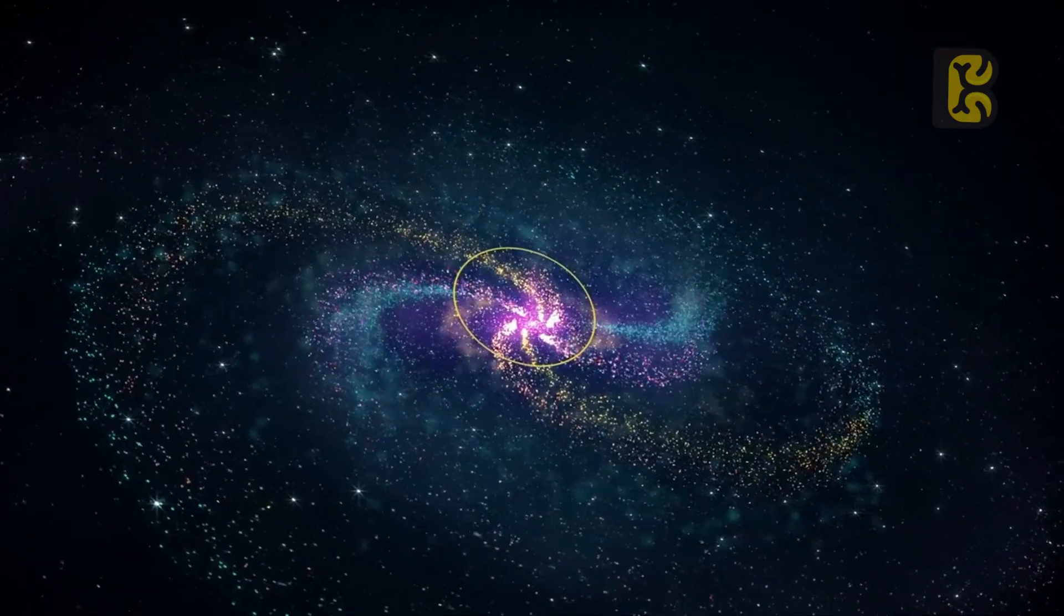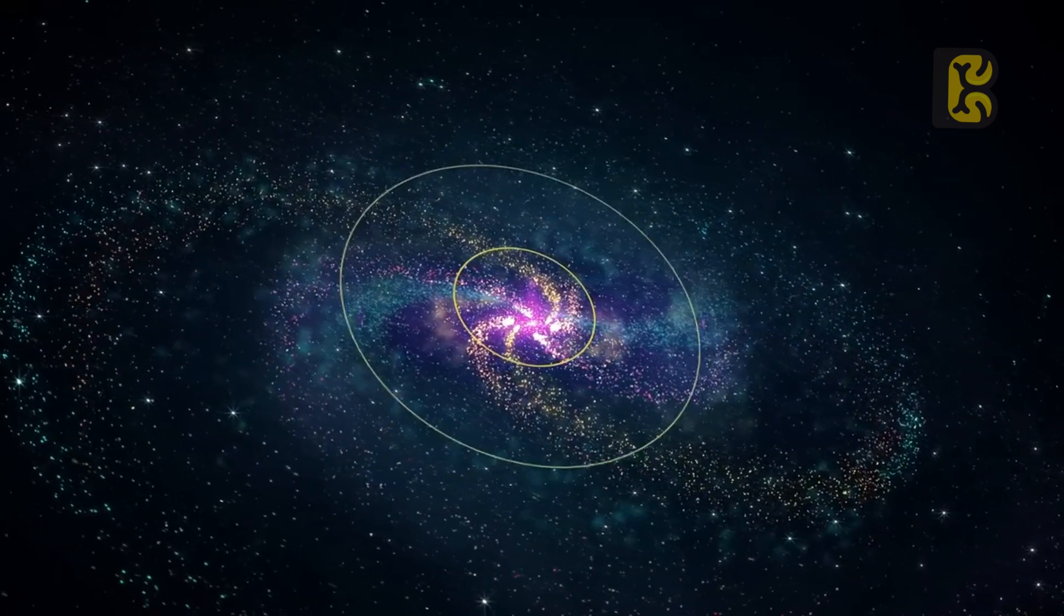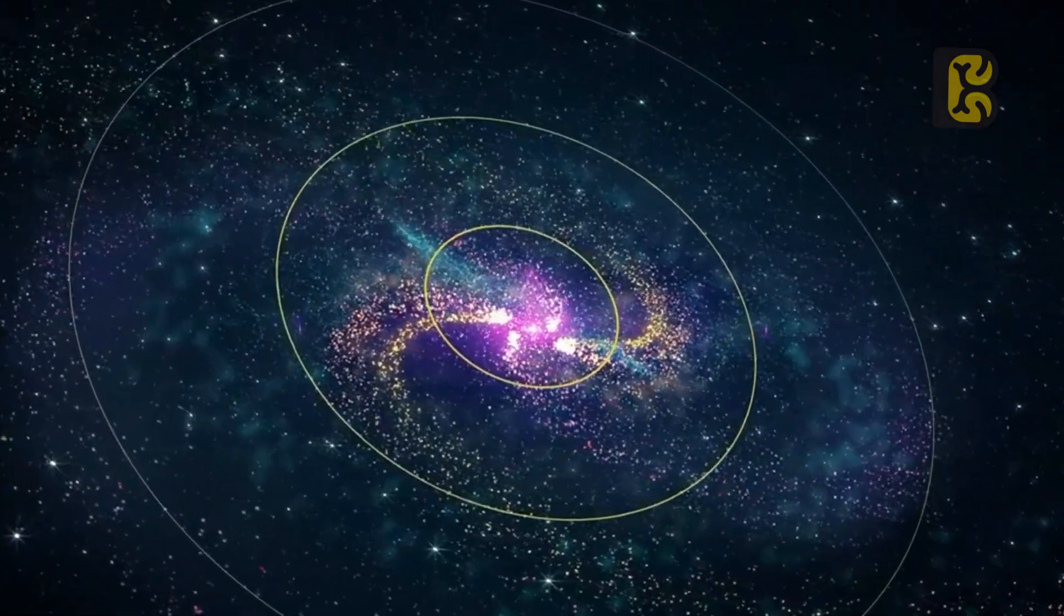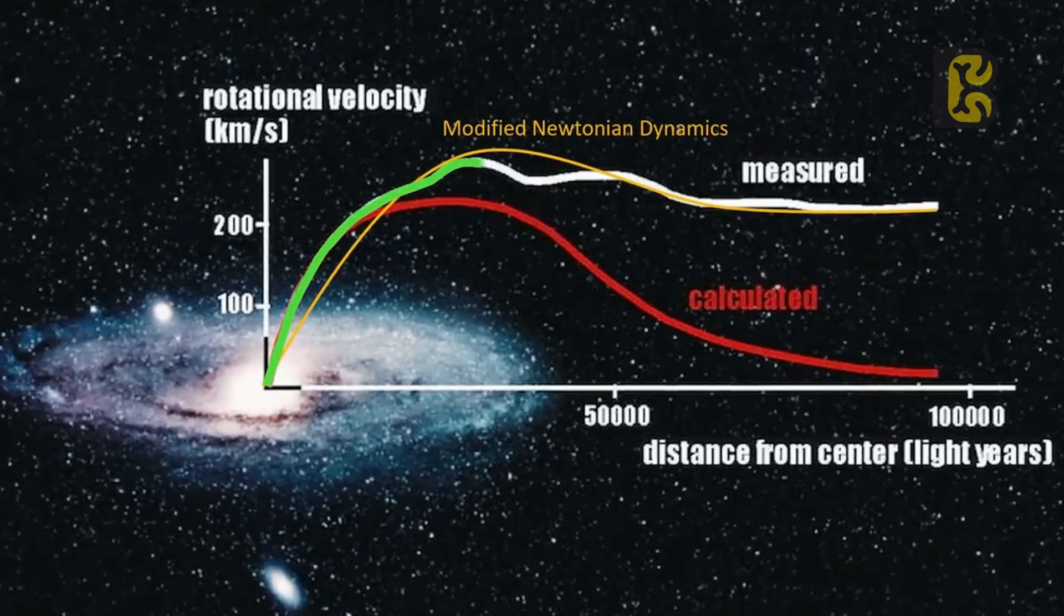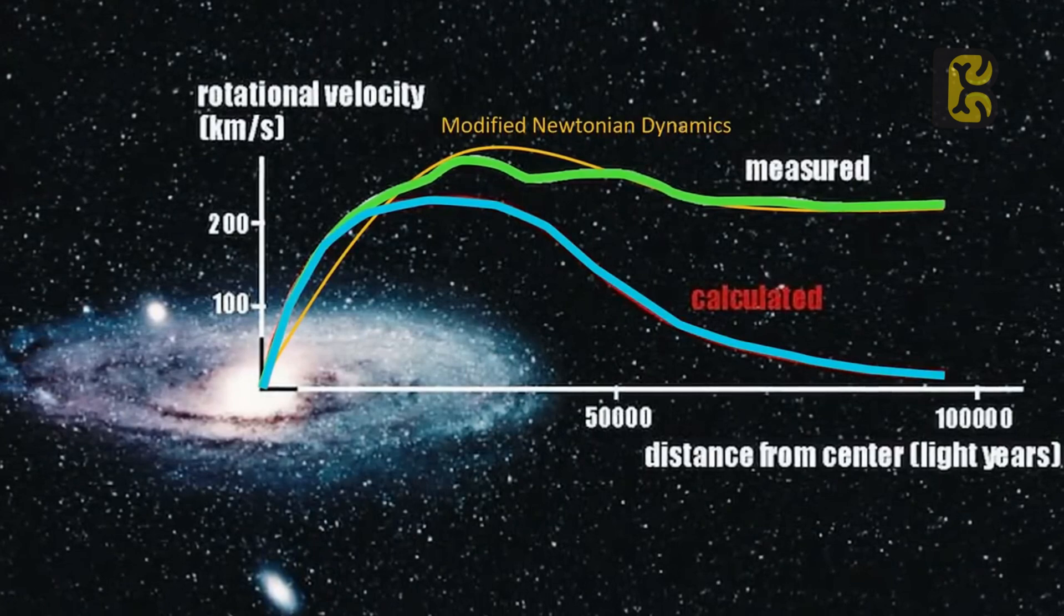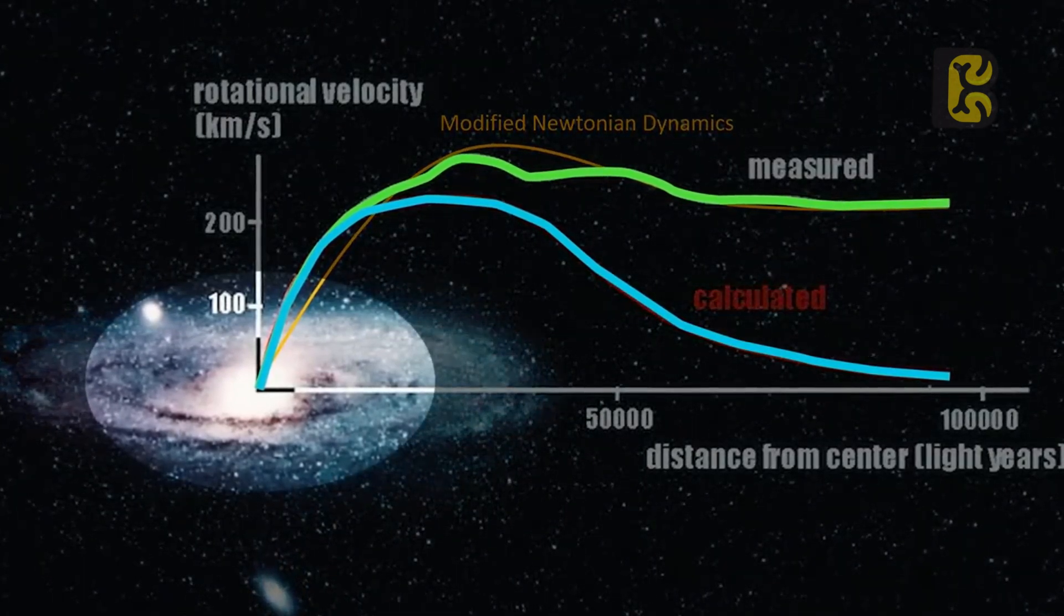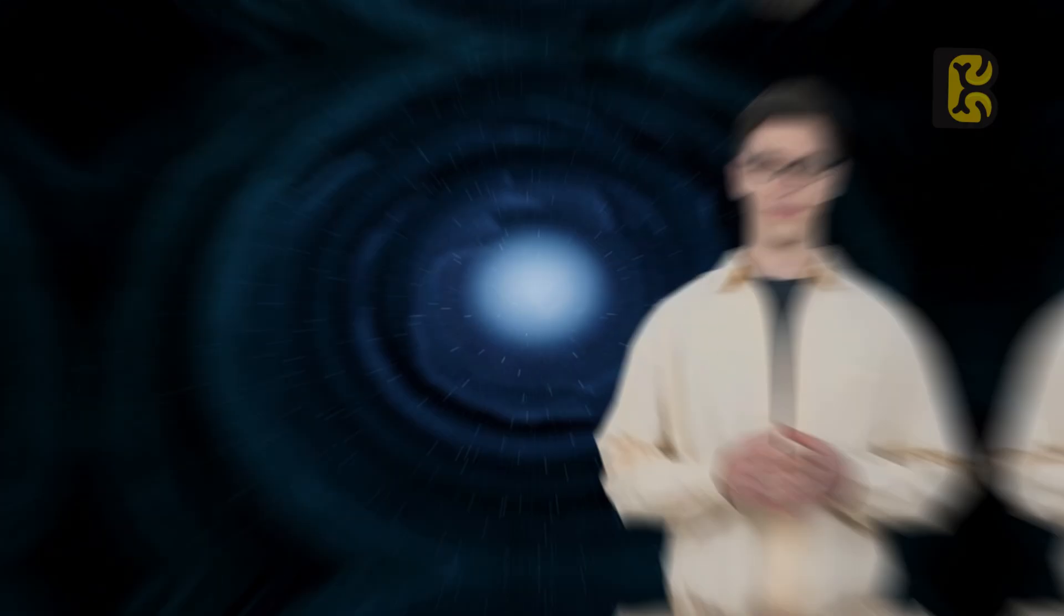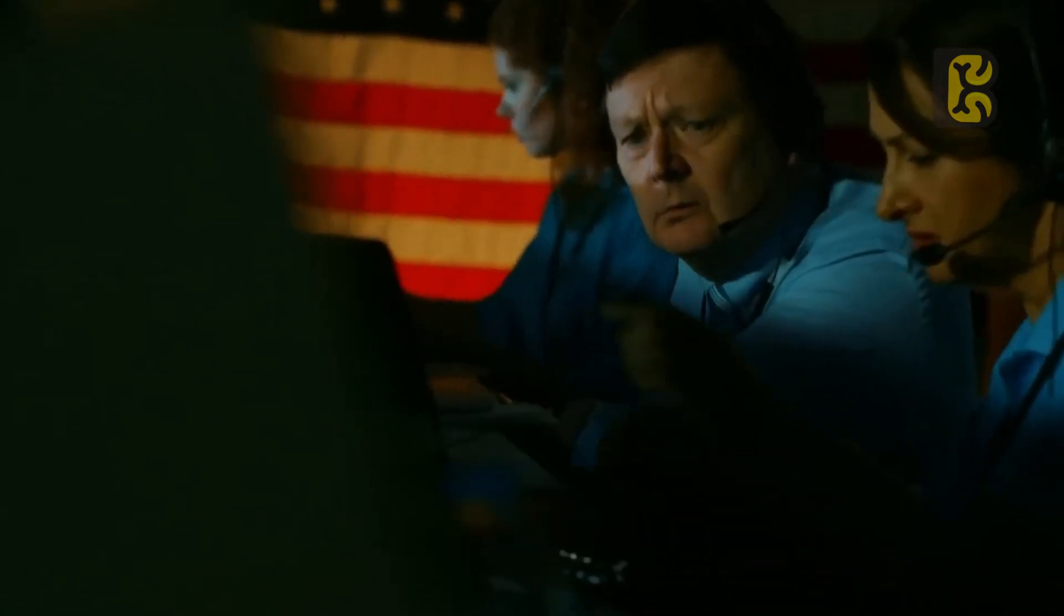The problem was that when we were observing galaxies, we noticed many different things that didn't align with classical physics. According to classical physics, objects closer to the galactic center should move faster, those a bit farther should move slower, and those at the very edge of the galaxy should move at an ultra-slow speed. However, in real life, when data on the movement speeds of objects at the outer edges of the galaxy was analyzed, it was found that the measured orbital velocities of these objects were exactly opposite to their calculated orbital velocities. Multiple observations convinced scientists that they were missing a piece of physics concerning gravity.